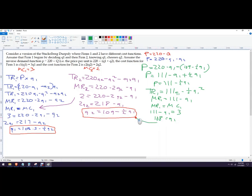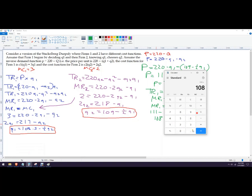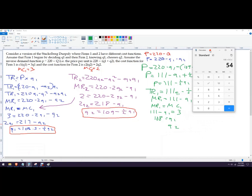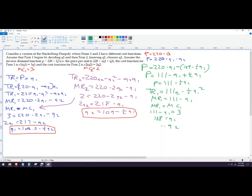And now all we have to do is plug that number into that reaction function, and that'll give us Q2. So Q2, it's going to be 109 minus half of that, and half of that is 54. So 109 minus 54 is 55. So here are the two quantities.